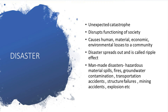You have transportation accidents. Then you have structure failures. One famous example of structure failure in India is the Keralundi train disaster. Then you have mining accidents, and there were around 377 deaths in the past three years because of mining accidents and explosions. And of course, you have explosions because of terrorism and other human criminal activities.